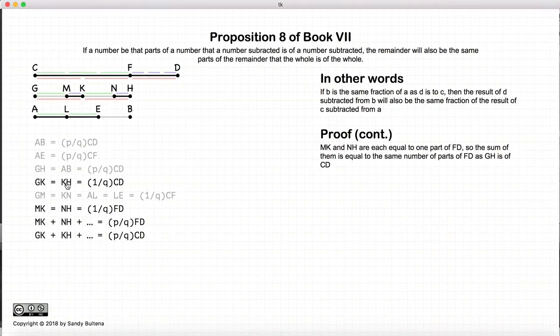Now, if we were to start adding up all the various equal bits, like GK plus KH, and MK plus NH, however many parts there were, in this case it's two, but it could be p, we have the sum of the little small pieces is equal to the fractions of FD that AB was of CD, and GK plus KH plus if there were more, which is equal to GH, is also the same fractions of CD.